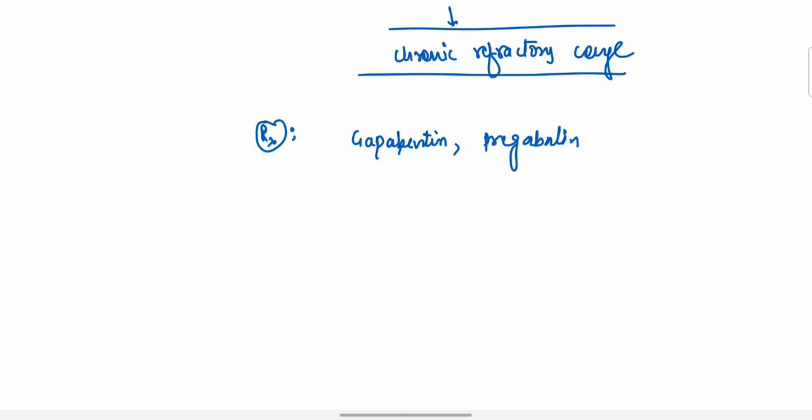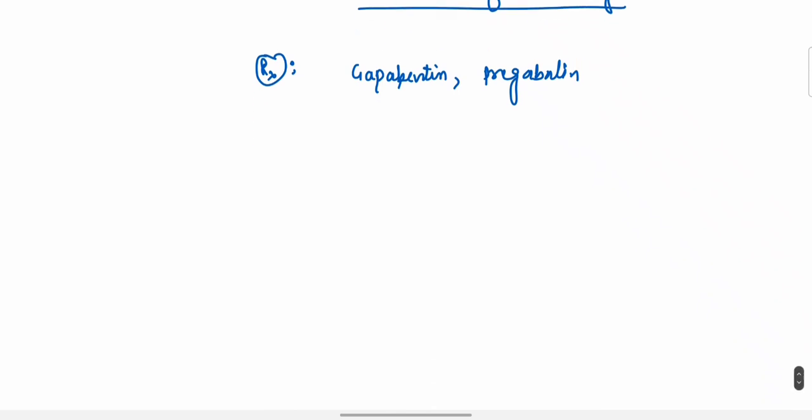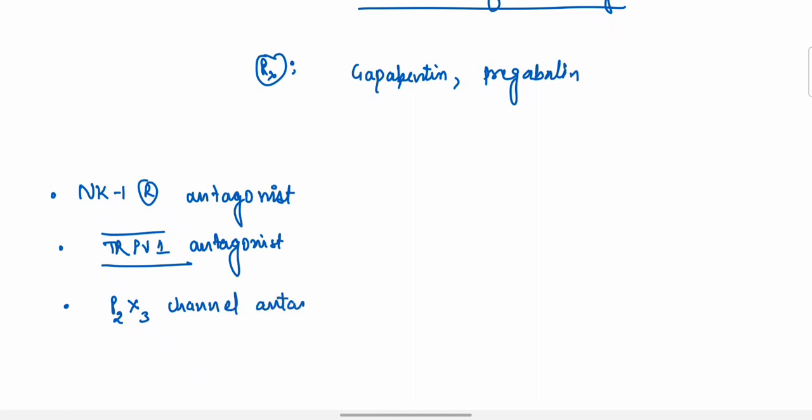New drugs which have not come to market but are under trial: one is Canon, a neurokinin-1 receptor antagonist; second is TRPV1, transient receptor potential vanilloid-1 channel antagonist; and third is P2X3 channel antagonist. Harrison's mentions this drug, and we learned about this receptor in the initial part of this video. The drug name is gefapixant.